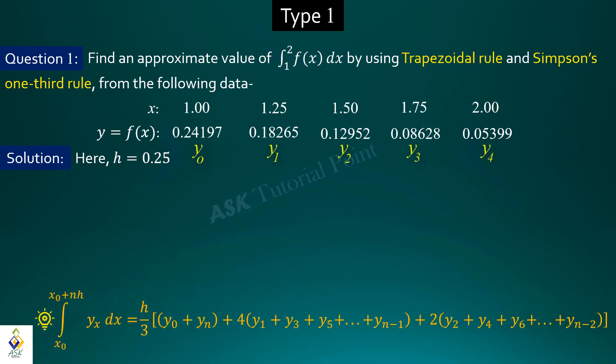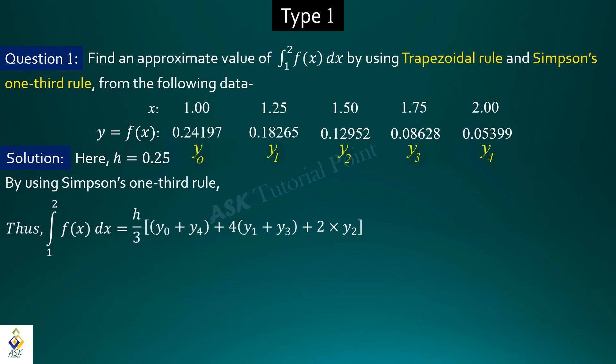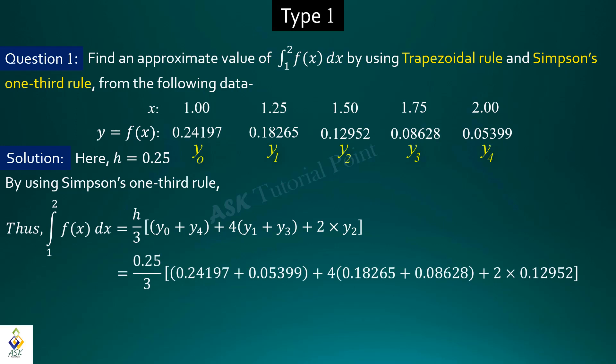Now I will use Simpson's one-third rule to solve this problem. I write the formula and place the values one by one. The approximate value obtained is 0.13589.